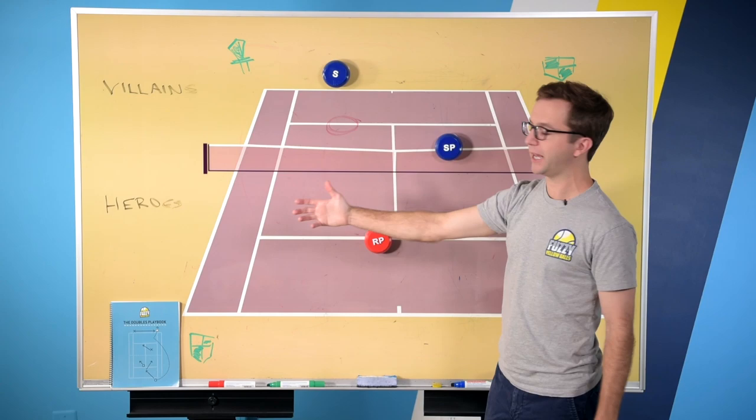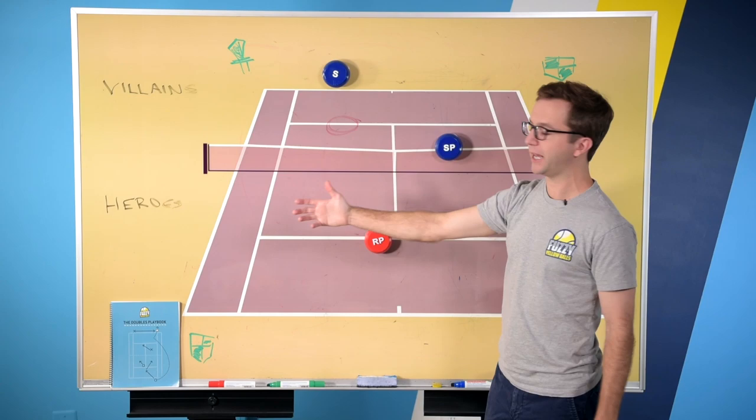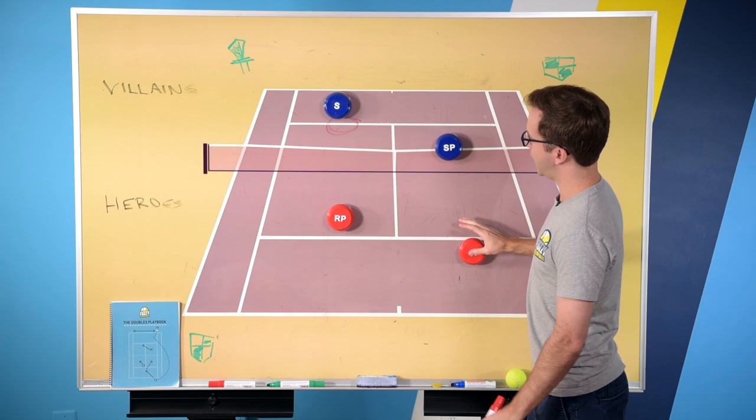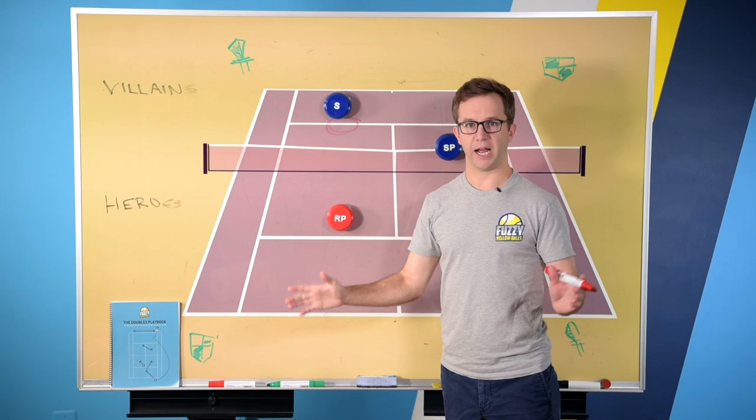Particularly against players, if they're staying back, if they're serving and staying back, they probably don't like to come to net. So if you pull them in and you're able to get into reasonable court position, then this shot, they're going to have to hit up on it. And then that gives you an opportunity, either your partner or you, to hit down on your next shot.